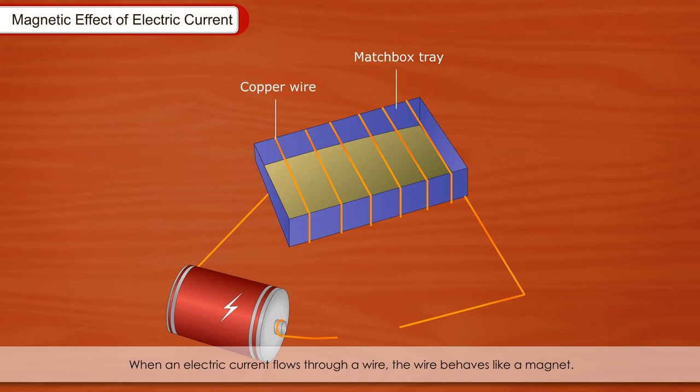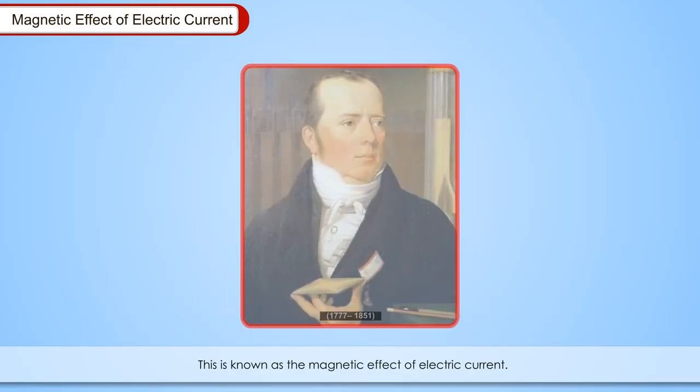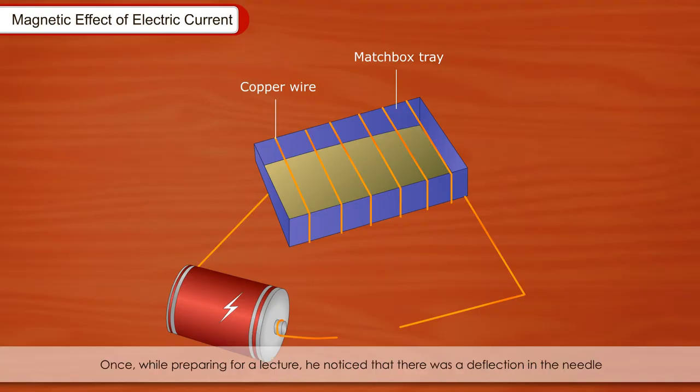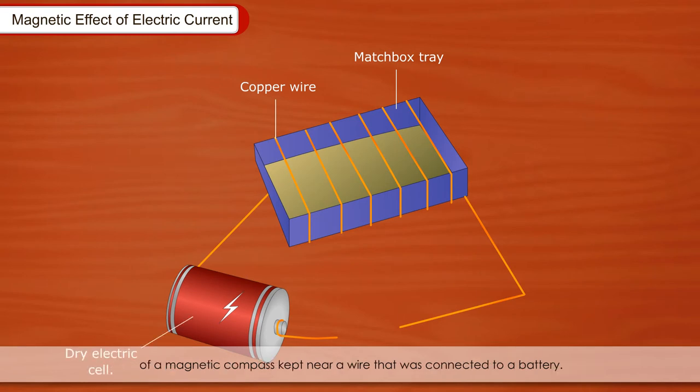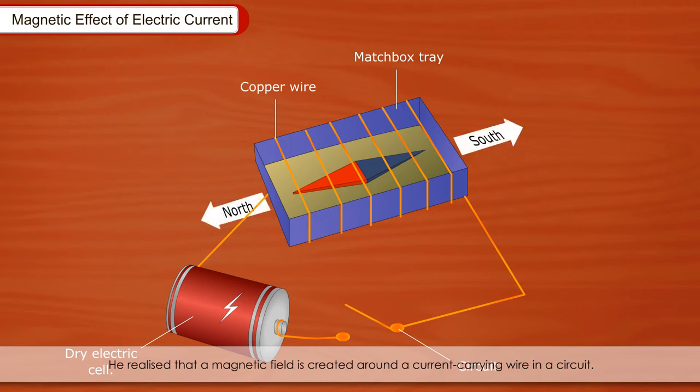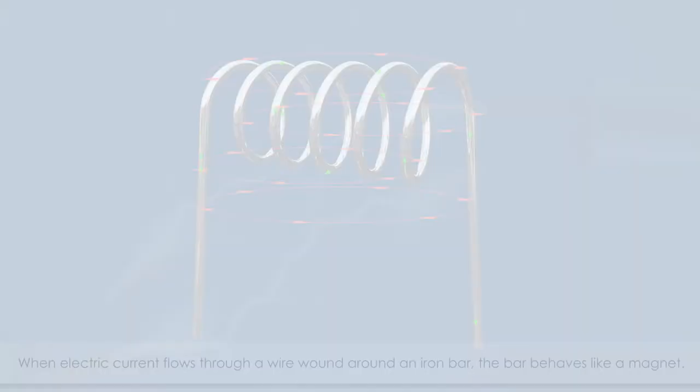Magnetic effect of electric current: When an electric current flows through a wire, the wire behaves like a magnet. This is known as the magnetic effect of electric current. It was discovered by Hans Christian Orsted, 1777-1851. Once, while preparing for a lecture, he noticed that there was a deflection in the needle of a magnetic compass kept near a wire that was connected to a battery. This deflection occurred every time the battery was switched on and off. He realized that a magnetic field is created around a current carrying wire in a circuit.